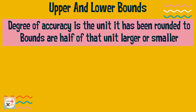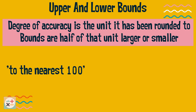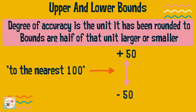When we round a number to a unit, the actual value can be up to half of that unit larger or smaller. So for example, if we are rounding to the nearest 100, the actual value could be up to 50 units larger or 50 units smaller.